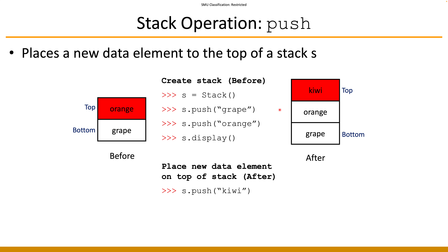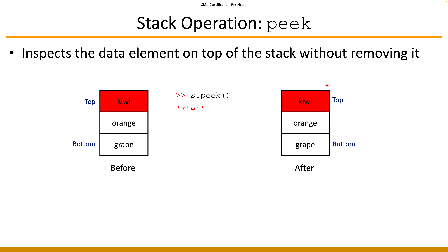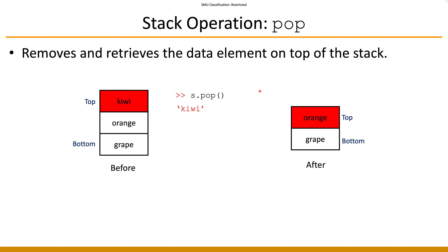This simple sequence demonstrates the last-in, first-out principle: you keep adding new items from the top, and when removing items you also do it from the top. The peek operation does not alter the structure of the stack — it merely checks the value currently at the top. The pop operation gets the value and also removes it from the stack. In this example, 'kiwi' gets returned and removed, so the new top becomes the next element in line, which is 'orange'.